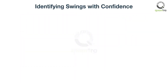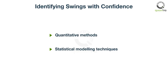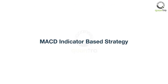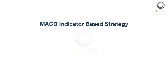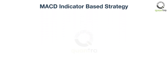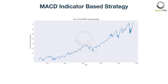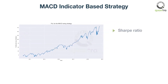How will you do that? You can use quantitative methods which use statistical modeling techniques to figure out the best trading strategy. One of the strategies taught in this course is to use the MACD indicator to identify the right time to enter and exit the trade. The profit or loss graph of this strategy is shown on screen. You will also use other performance measures such as Sharpe ratio and maximum drawdowns to form a complete analysis of the strategy.